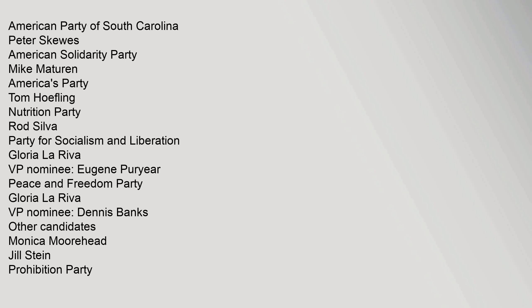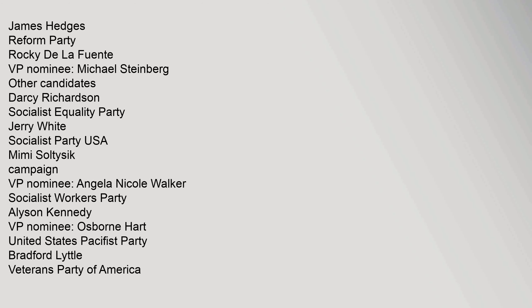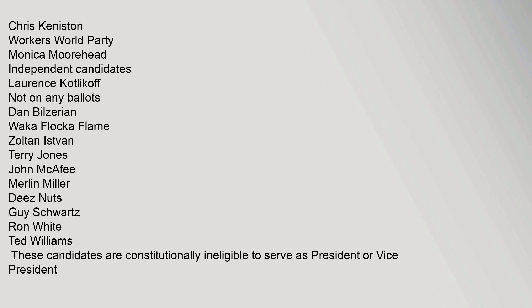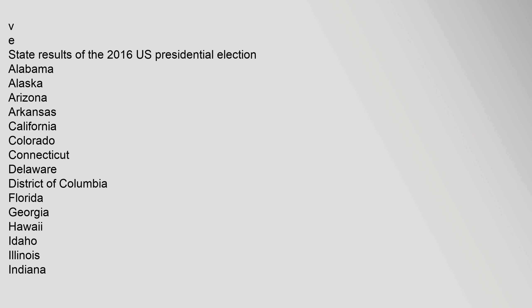Other third-party candidates included: American Party of South Carolina Peter Skewes, American Solidarity Party Mike Maturin, Americas Party Tom Hoefeling, Nutrition Party Rod Silva, Party for Socialism and Liberation Gloria La Riva VP nominee Eugene Peryear, Peace and Freedom Party Gloria La Riva VP nominee Dennis Banks, Prohibition Party James Hedges, Reform Party Rocky De La Fuente VP nominee Michael Steinberg, Socialist Equality Party Jerry White, Socialist Party USA Mimi Soltysik, Socialist Workers Party Allison Kennedy, Veterans Party of America Chris Keniston, Workers World Party Monica Moorhead. Note: some candidates are constitutionally ineligible to serve as President or Vice President.